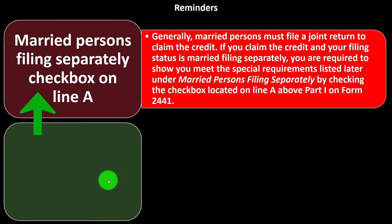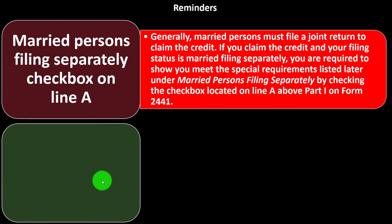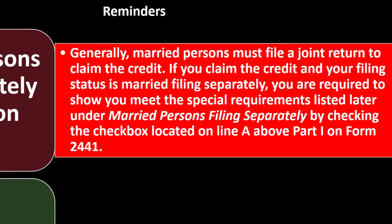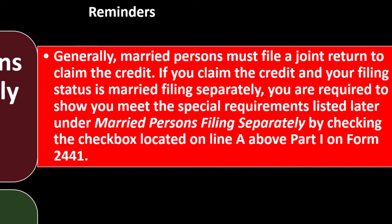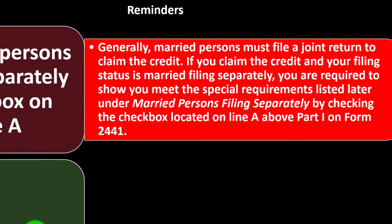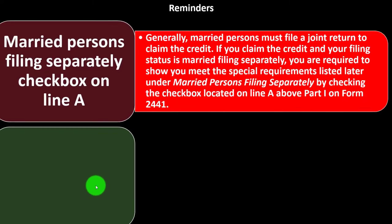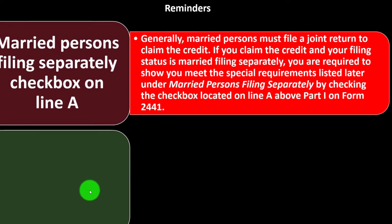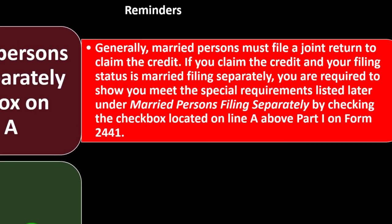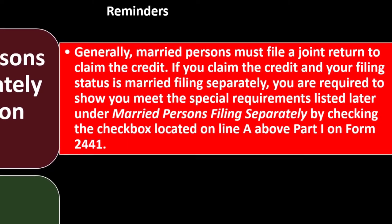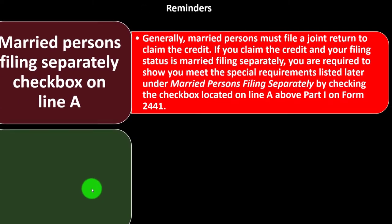Reminder: married persons filing separately — checkbox on line A. Generally, married persons must file a joint return to claim the credit. If you file married separately, you're often restricted in terms of credits because the IRS is skeptical of potential advantage-taking in that instance. If you claim the credit and your filing status is married filing separately, you are required to show you meet the special requirements by checking the box on line A above Part 1 on Form 2441.